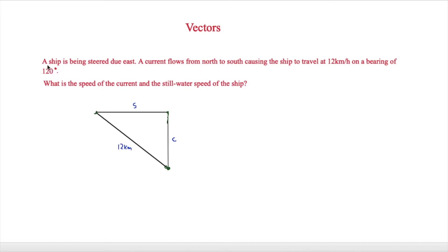This next question involves more context: a ship is steered due east, but a current flows from north to south, causing the ship to travel at 12 kilometres per hour on a bearing of 120 degrees. What is the speed of the current and the still water speed of the ship? We draw a velocity triangle where s is the still water speed and c is the current. The bearing of 120 degrees means the interior angle of the triangle is 120 minus 90, which is 30 degrees.